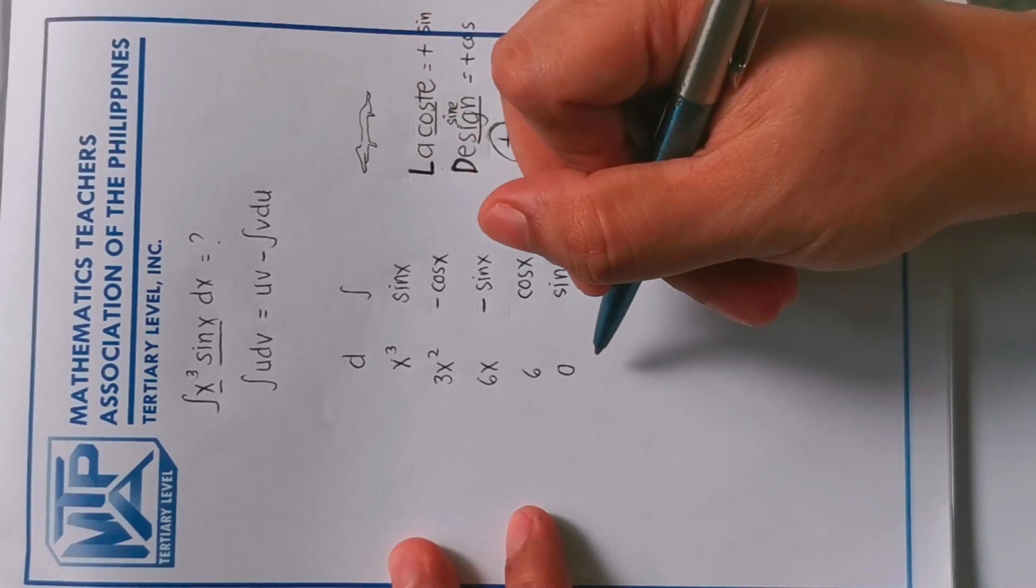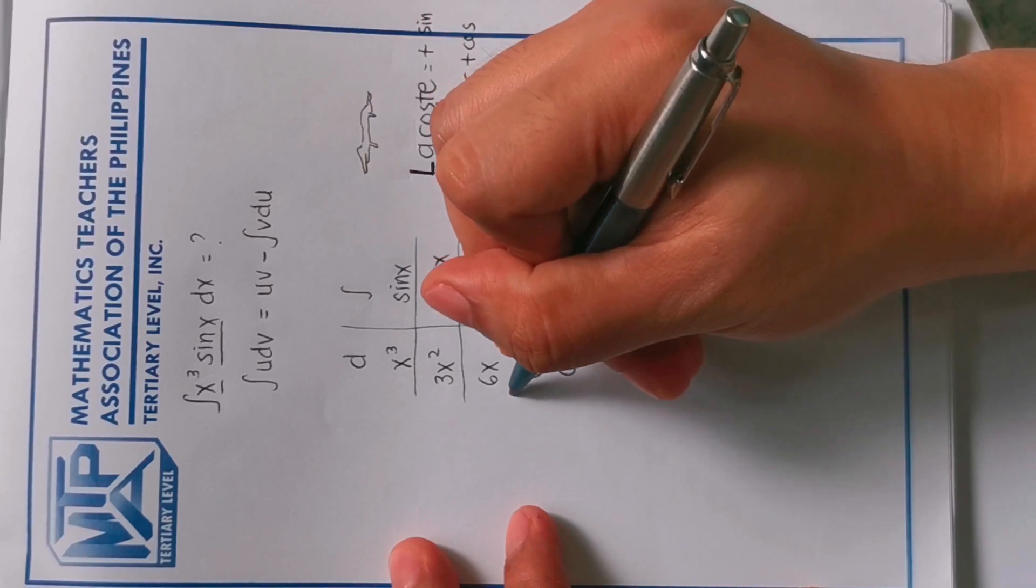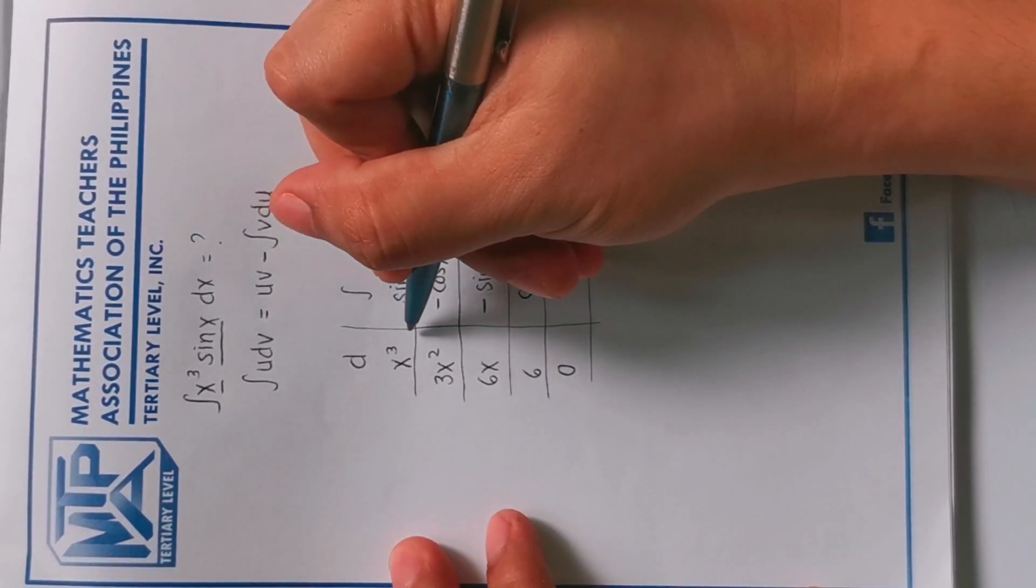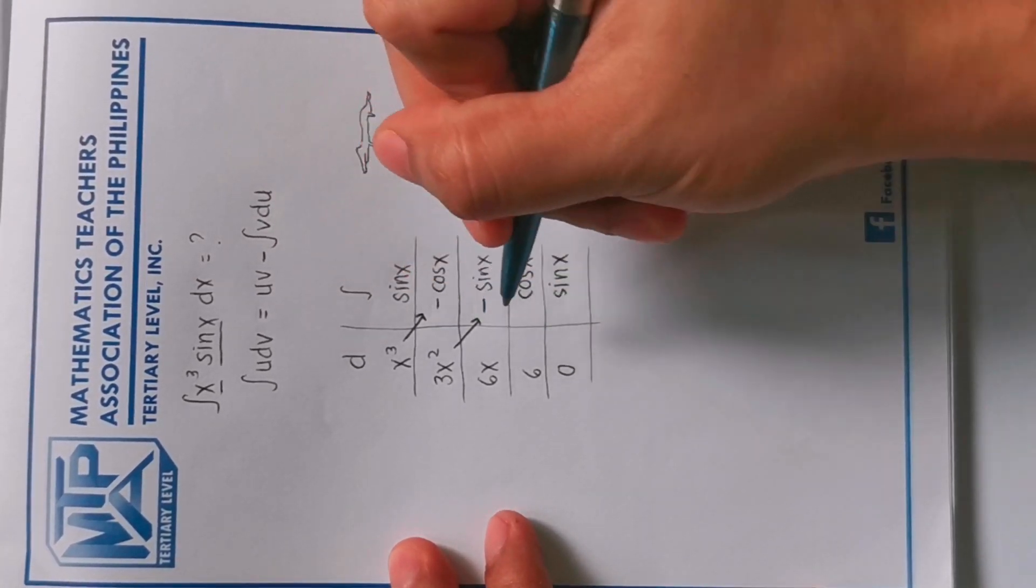So after this, we will make lines like a table. We're gonna pair this, pair them. We're gonna pair these terms.